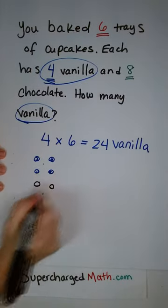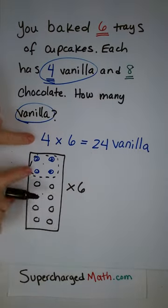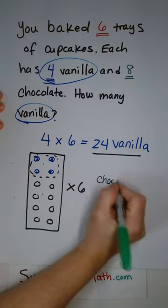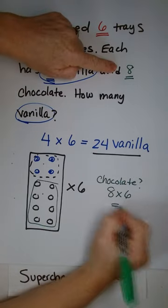So you're going to multiply six trays by four vanilla and you get 24 vanilla cupcakes. You can also figure out how many chocolate ones. Notice it's twice as much.